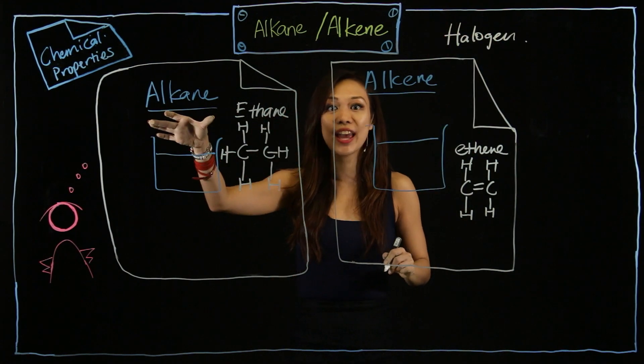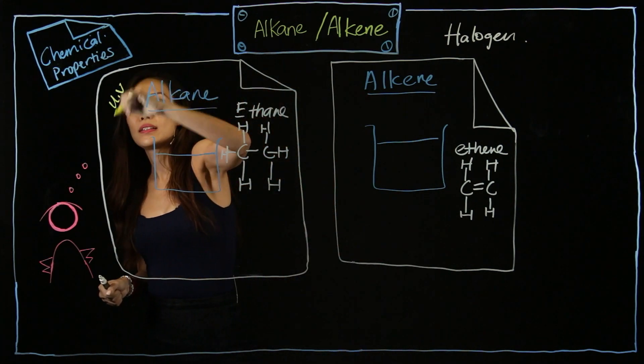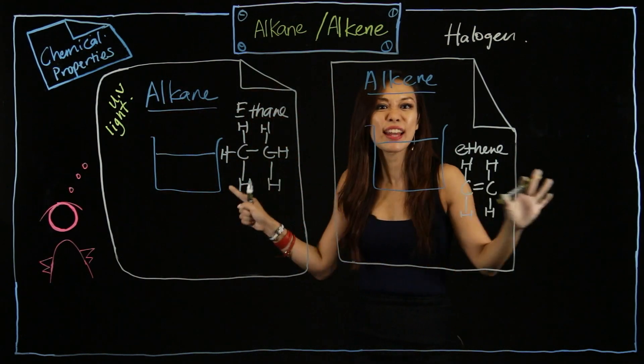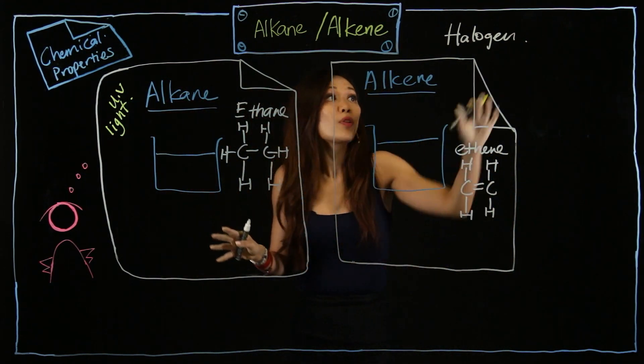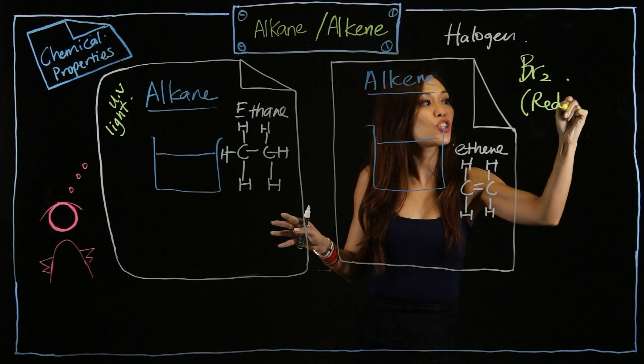But the difference is alkane requires what? They need UV light. While alkene doesn't at all. So if I add bromine, which is Br2, itself is a reddish brown solution.